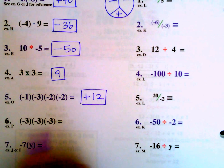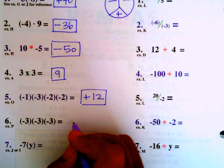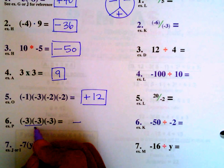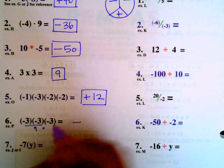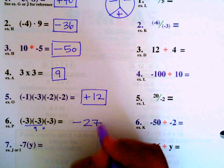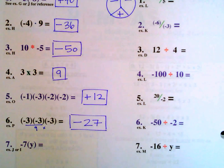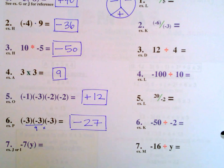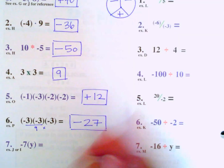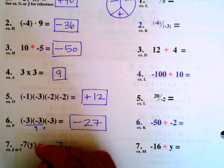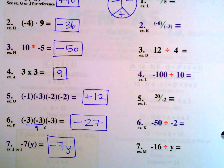We have an odd number of negatives, so the answer is going to be negative. 3 times 3 is 9, and 9 times 3 is 27, so the answer is negative 27. Number 7 is negative 7 times y — that's a negative times a positive, so it's negative. We write it as negative 7y, since we can't simplify further without a value for y.